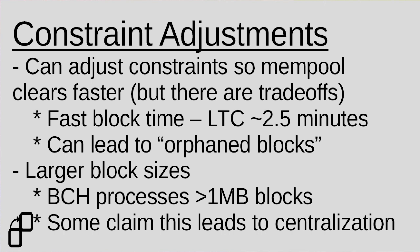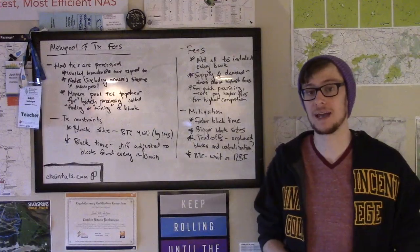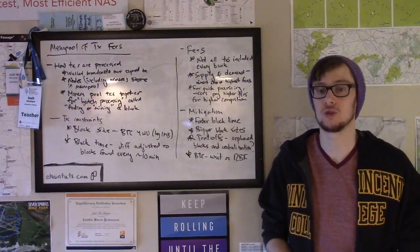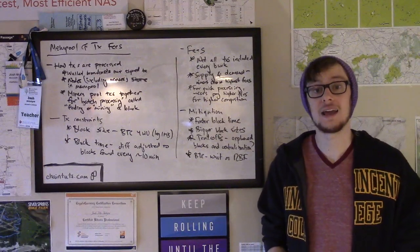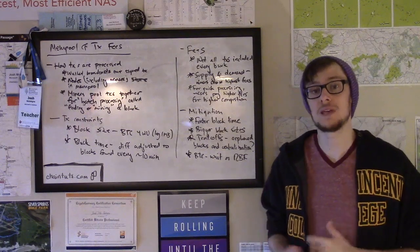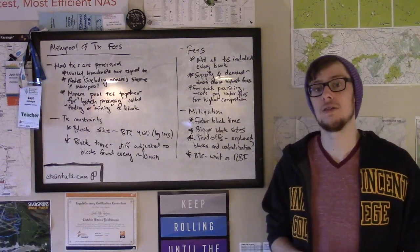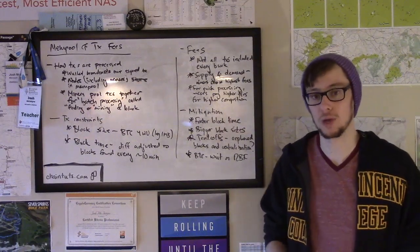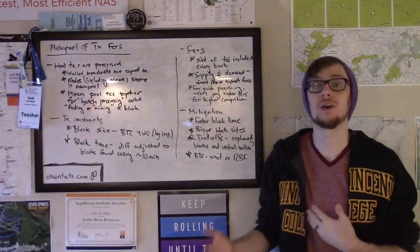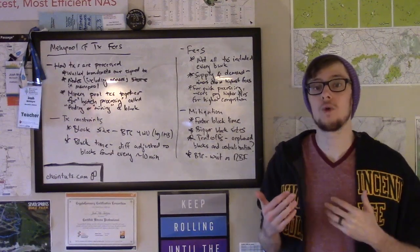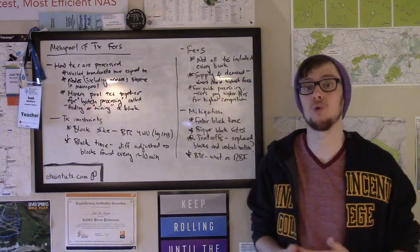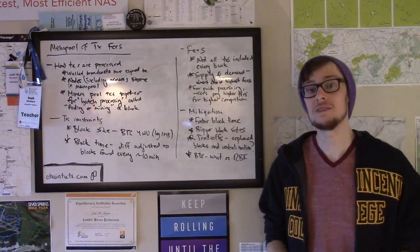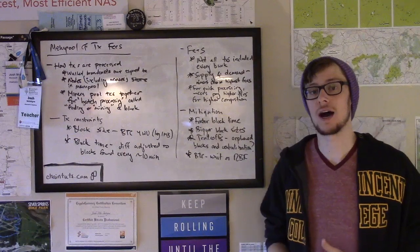Another constraint that can be changed is the block size. Forks of Bitcoin such as Bitcoin Cash process a much higher amount of transaction data than one megabyte at a time, and that limit has been increased over time. The design idea behind Bitcoin Cash is to keep the 10-minute block time, but fit so many more transactions into one block that the mempool is generally always cleared within that 10 minutes. Changing these constraints so the mempool doesn't become congested means fees stay low and transaction times stay fast.